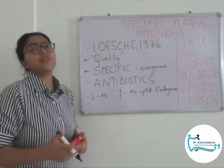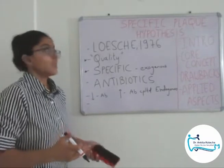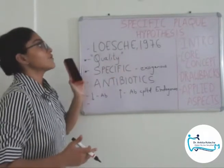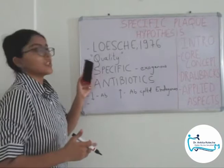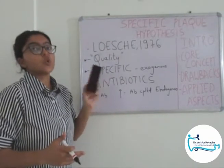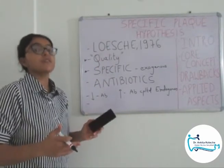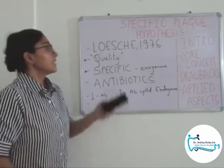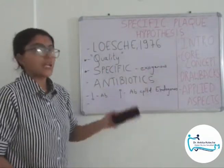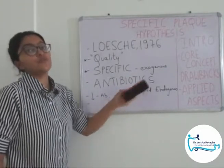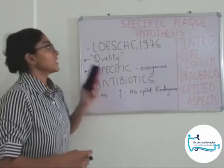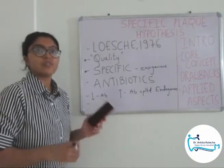This led to another brainstorming research and another hypothesis. This completes the topic of Specific Plaque Hypothesis. Quick summary: Loesche 1976 gave specific plaque hypothesis, the focus of which is quality of the plaque rather than quantity. This hypothesis says specific microorganisms cause periodontal disease by using their virulence factors, contributing to the pathogenicity of plaque. They were assumed to be exogenous earlier, and later found to be endogenous. Antibiotics failed to show any remarkable improvement in treatment outcomes.